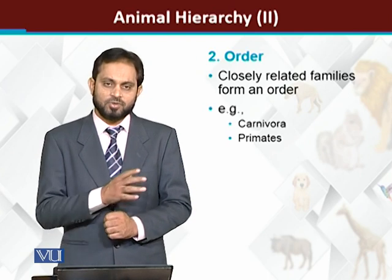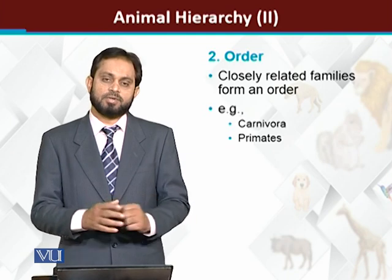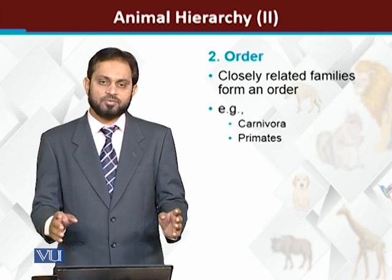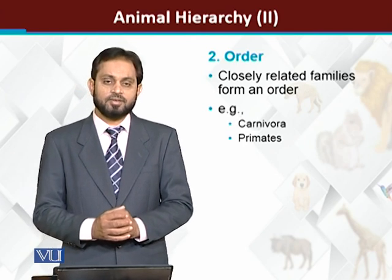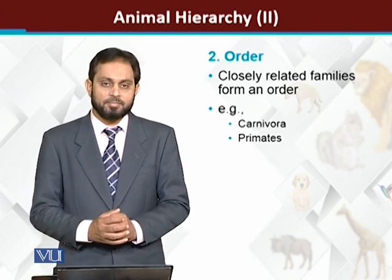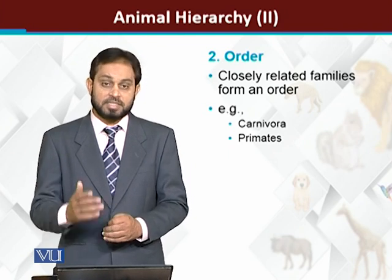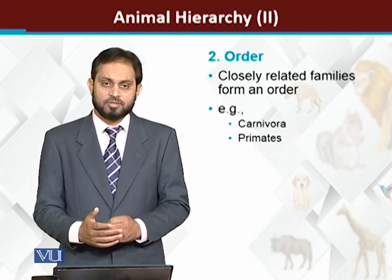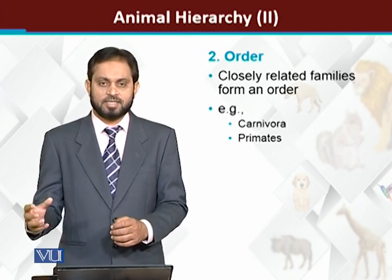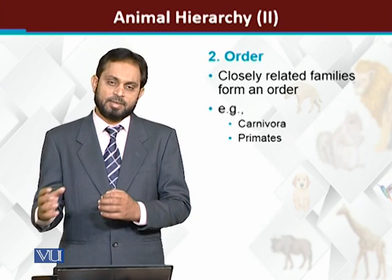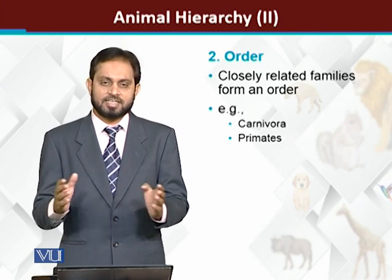They are all grouped together in one order — that is Carnivora. Carnivora includes animals belonging to different genera and different families. Human is placed in the order Primates. Primates include not just humans but also chimpanzees and monkeys. These different animals are grouped together into an order. Order is related to families.